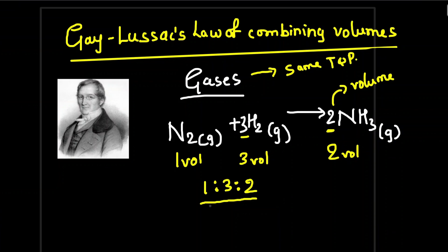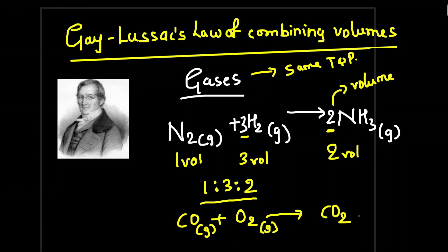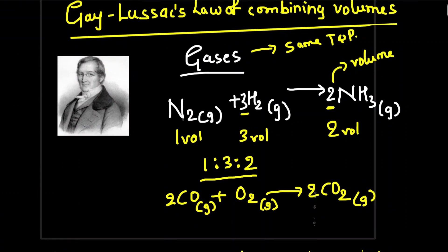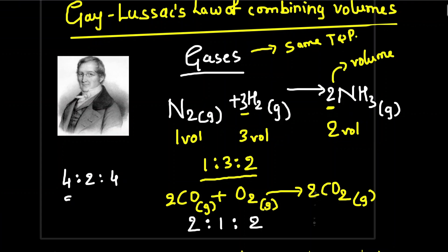One more example: carbon monoxide reacts with oxygen to give carbon dioxide. At room temperature, CO is gas, oxygen is gas, and CO2 is also a gas. Balancing gives 2CO + O2 → 2CO2. The ratio between volumes is 2:1:2, which is a simple ratio. If you had 4:2:4, you can simplify it to 2:1:2.